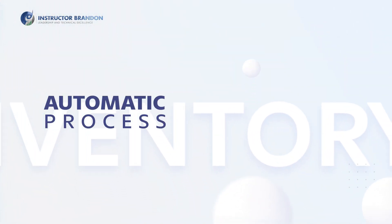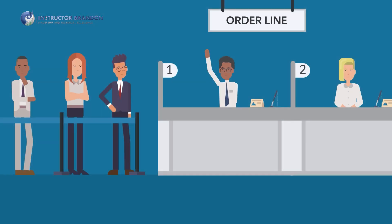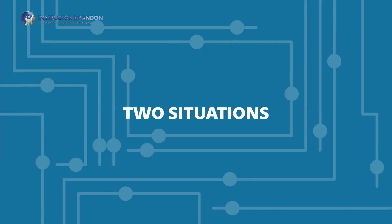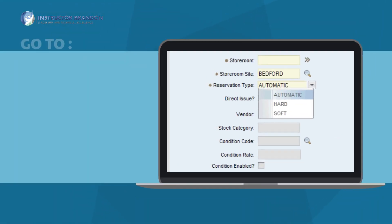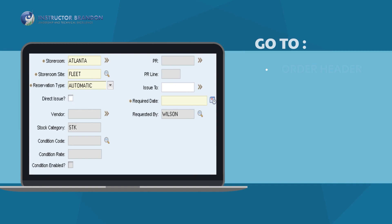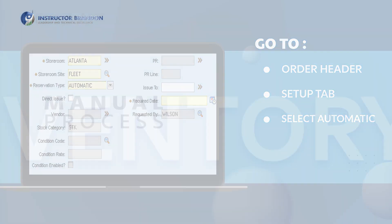The automatic process. Whenever a new order line is created, you can automatically reserve inventory. This process applies in two situations. First, when automatic is selected in the reservation field on the general tab on the accounts receivable parameters form. Second, when you select automatic in the reservation field, setup tab on a specific orders order header.